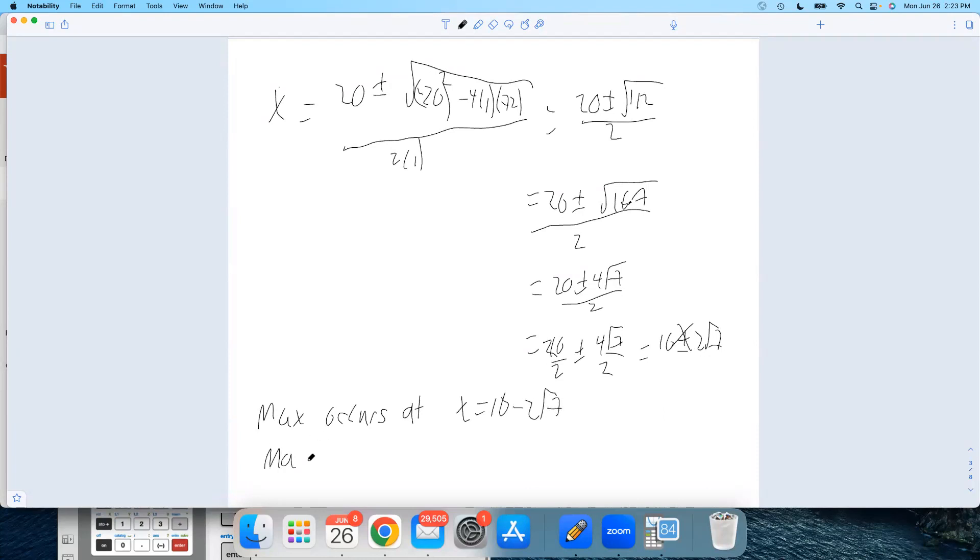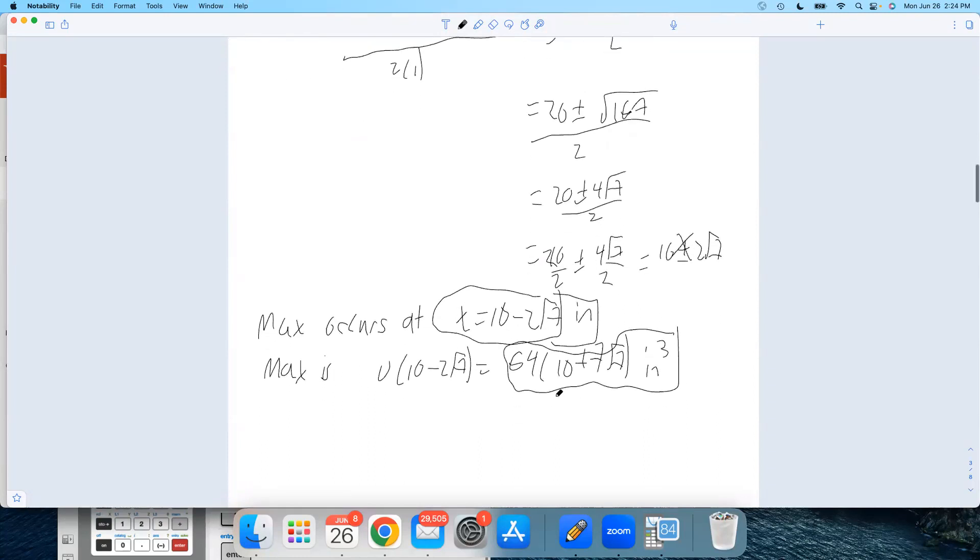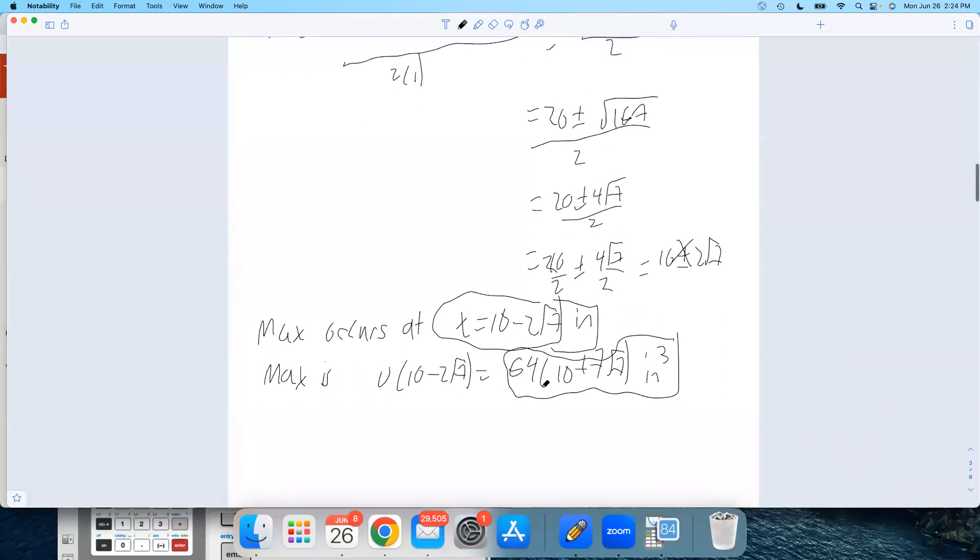So our max occurs at the location X equals 10 minus 2 root 7. And the max is plugging that back in. Like I've already done this. You can just check me if you want. 64 times 10 plus 7 root 7 cubic inches. And of course, in any real world scenario, we'd probably, this is inches, probably plug these in a calculator and get some decimal approximation of that. And you could do that here if you wanted to. But those are the numbers. Okay. That's a good place to stop on that one.